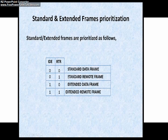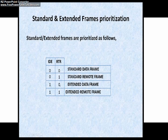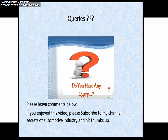In this slide you can see how standard and extended frames are prioritized. If both the IDE and RTR bits are dominant, the frame is a standard data frame. If IDE is dominant and RTR is recessive, the frame is a standard remote frame. If IDE is recessive and RTR is dominant, the frame is an extended data frame. If both bits are recessive, the frame is an extended remote frame. For queries please leave comments below, and if you enjoyed this video please subscribe to my channel Secrets of Automotive Industry and hit thumbs up. Thank you all.